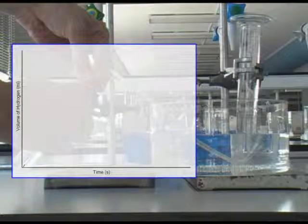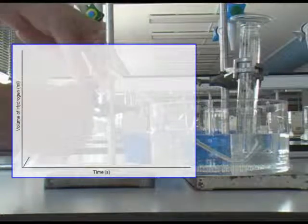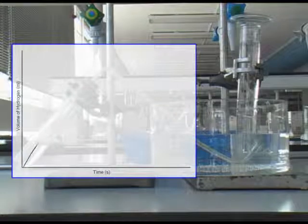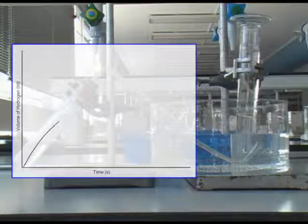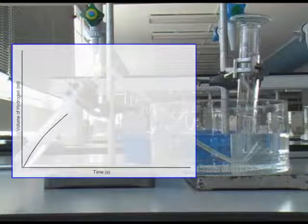You can tell from the steepness of the graph that initial production of hydrogen gas is quite fast. However, as the reaction proceeds, you can see that the gradient of the line, or its steepness, becomes less.